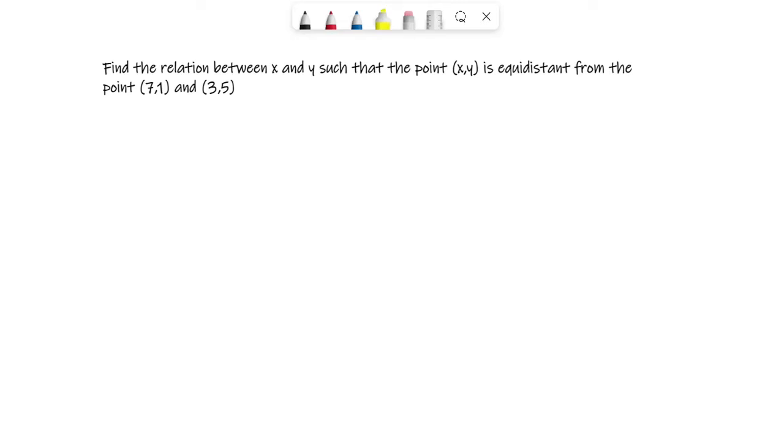Hello everyone, in this video we'll be talking about some important questions related to coordinate geometry. We'll be covering important questions of coordinate geometry one by one. In this one it says find the relation between x and y such that the point (x,y) is equidistant from the point (7,1) and (3,5).